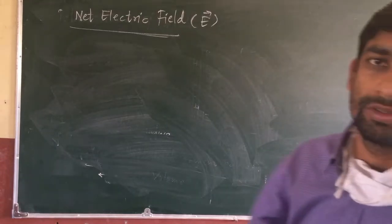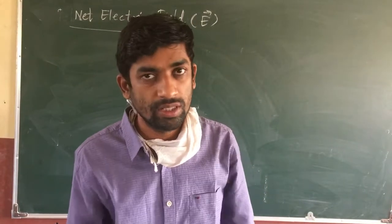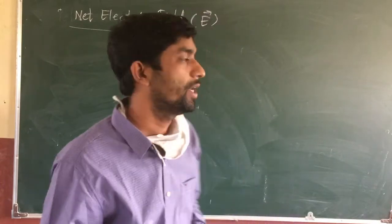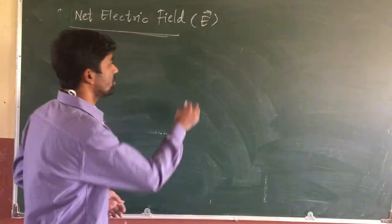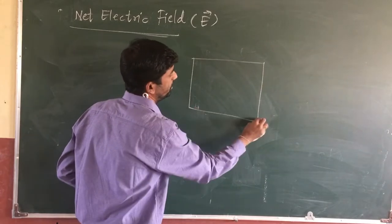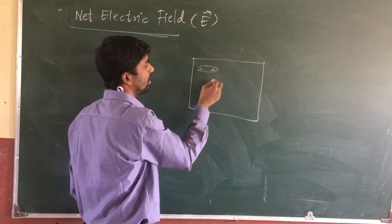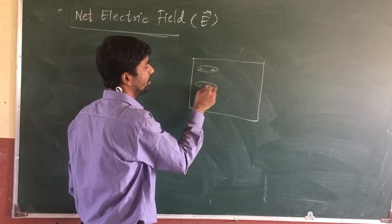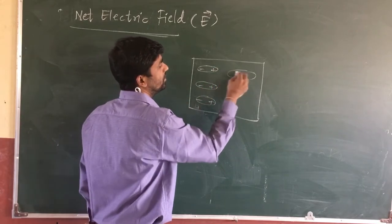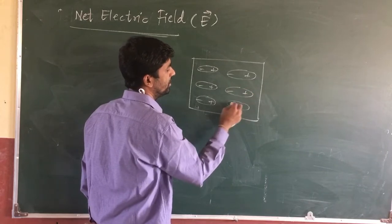Good afternoon students. Today we are going to learn what is the net electric field inside the dielectric material. Suppose this is your dielectric material and this dielectric material is polarized. That means there are negative-positive dipoles, and these dipoles are oriented in the direction of the electric field.